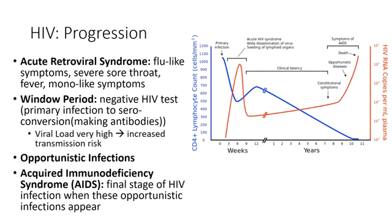Acute retroviral syndrome is the first stage — it presents with flu-like symptoms that mimic many other infections: severe sore throat, fever, and mono-like symptoms. When someone has flu-like symptoms, it's important to obtain a sexual history — are they sexually active, homosexually active, or do they use IV drugs? Be looking for those severe sore throats. In clinical cases, if you're not asking the proper questions, you'll miss the diagnosis of acute HIV infection.